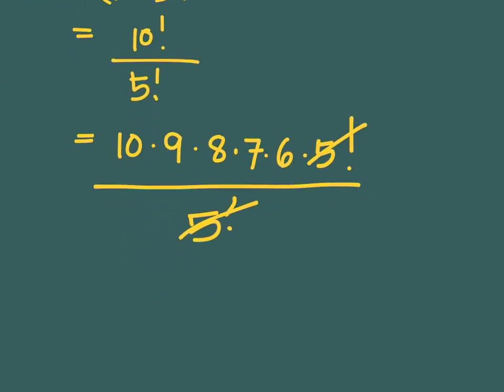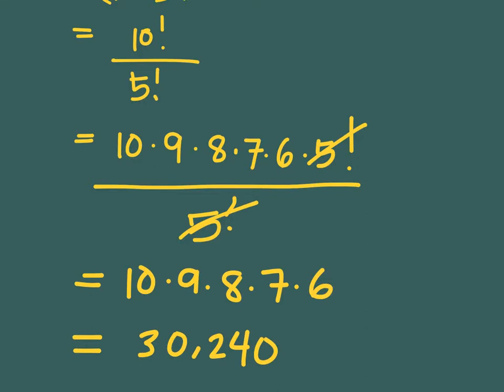So the final answer is basically 10 times 9 times 8 times 7 times 6. If you compute for this value, this is equal to 30,240.